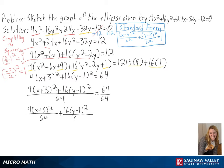So putting our equation into standard form, we get x plus 3 squared over 16 plus y minus 1 squared over 4 is equal to 1.